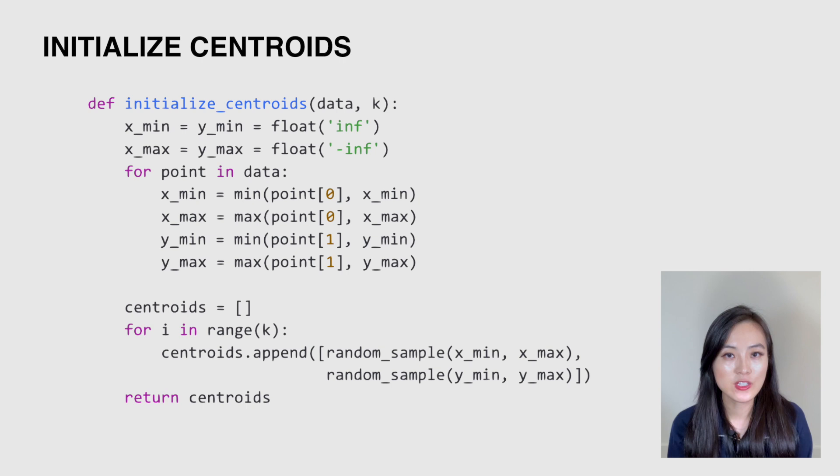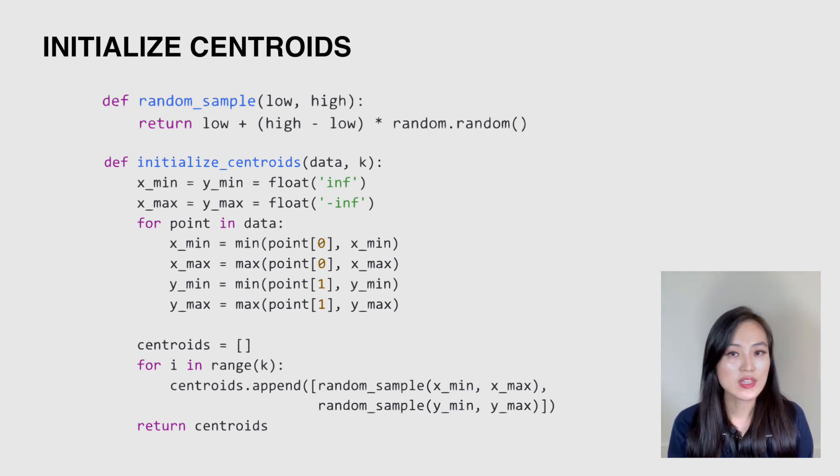First, let's initialize the centroids. The idea here is to initialize them randomly within the region of all the data points. So let's first get the range of the region. Here we use x_min and x_max to demonstrate the minimum value and the maximum value of the x coordinate respectively, similar for y_min and y_max. Then we create a list of k centroids, and for each of them we want to sample the x and y coordinates randomly within the range of all points.